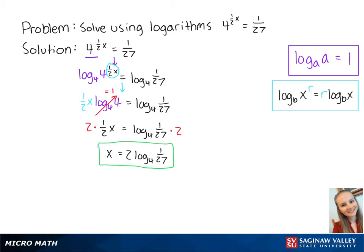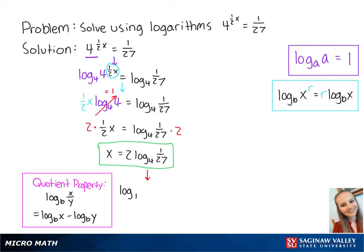However, we can simplify this further. If we use the quotient property, the log base 4 of 1 over 27 is equal to the log base 4 of 1 minus the log base 4 of 27.